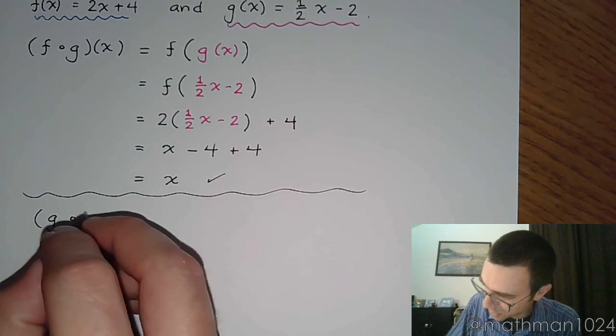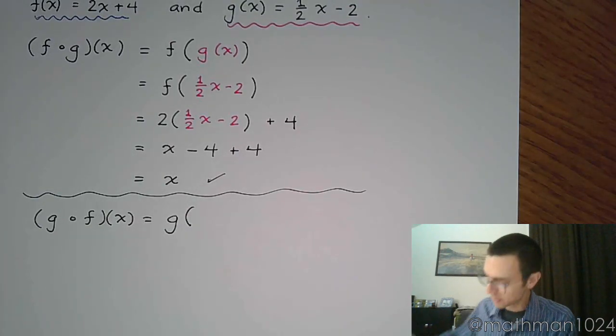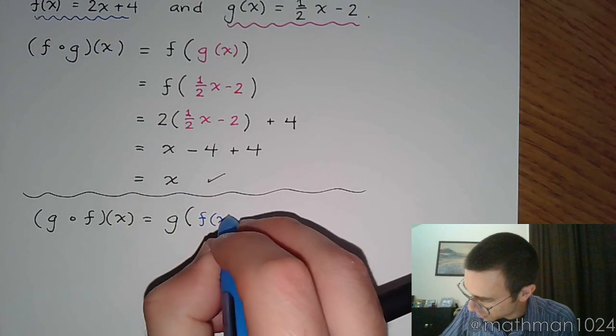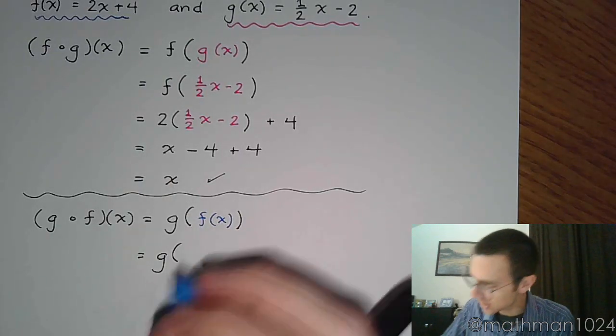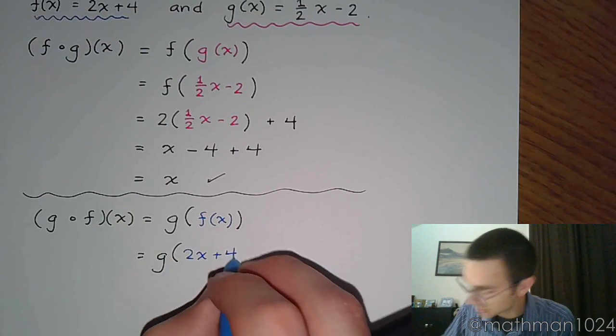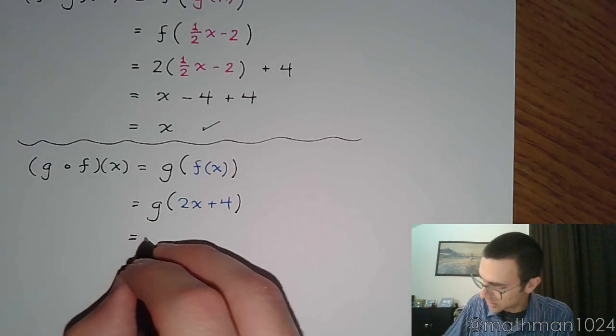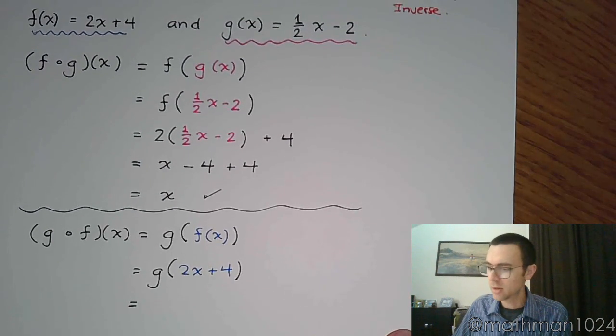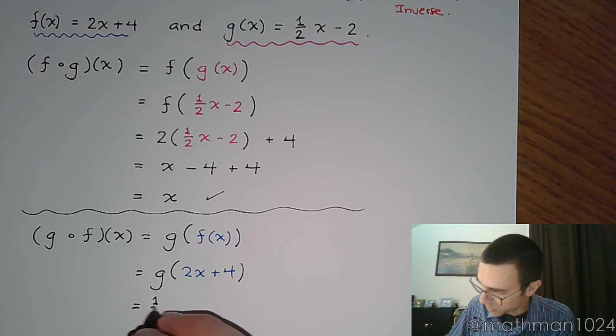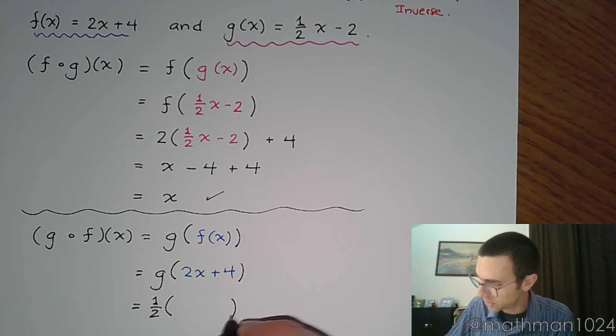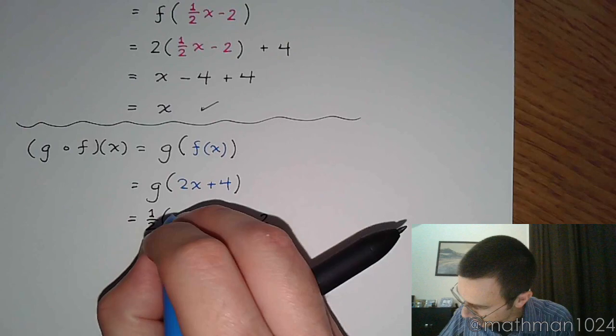If I do g composed with f of x, that means g of, and here we're plugging in the blue f of x. Into g, I'm going to plug in f of x is 2x plus 4, like that. So g of 2x plus 4, let me back it up. Here's g of x. I'm going to do one half times x minus 2, so that's going to be one half times this input value minus 2. So let's plug in the 2x plus 4.